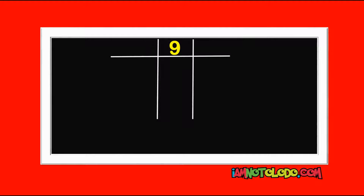The first step is to draw your lines like this, then write down your 9 and write down your 15. 3 can divide 9 and 15, so we start with 3. 3 in 9 is 3, 3 in 15 is 5. We still have 3 over here, so we can still use 3 to divide. 3 in 3 is 1.